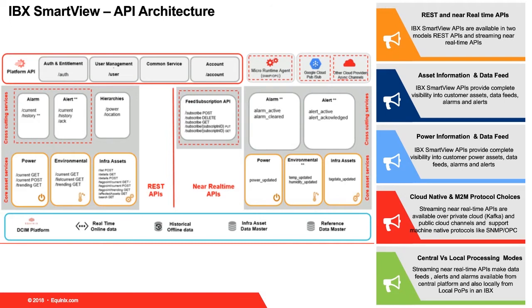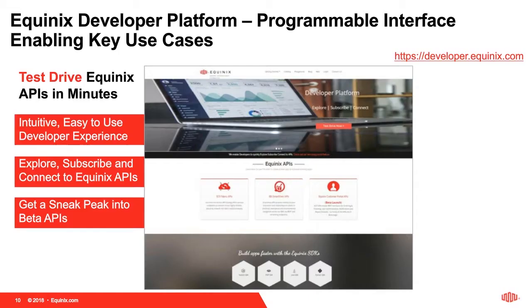The next slide talks about our Equinix Developer Portal Platform, which is our core platform for all customer-facing APIs. It provides an intuitive, easy-to-use developer experience using which developers can explore, subscribe, and connect to Equinix APIs across our product lines — IBX SmartView being one of the products. You can also get a sneak peek into our upcoming beta APIs. Using the Playground feature, you can test-drive APIs in minutes. We will go into the Equinix Developer Platform as we start our use case demos later in this webinar.